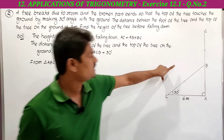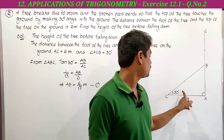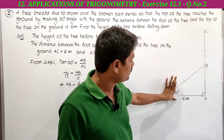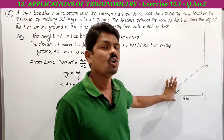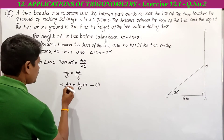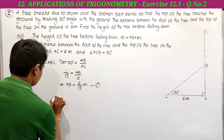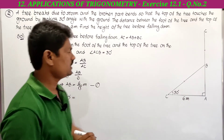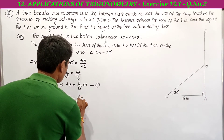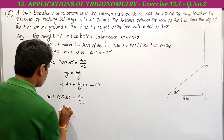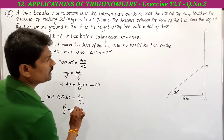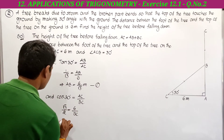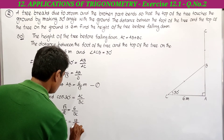Next we find BC. With respect to 30 degrees, AC is the adjacent side and BC is the hypotenuse. The trigonometric ratio relating adjacent side and hypotenuse is cos. From triangle ABC, cos 30 equals adjacent side by hypotenuse, which is AC by BC. Cos 30 value is root 3 by 2. So root 3 by 2 equals 6 by BC. By cross multiplication, BC equals 12 by root 3 meters.